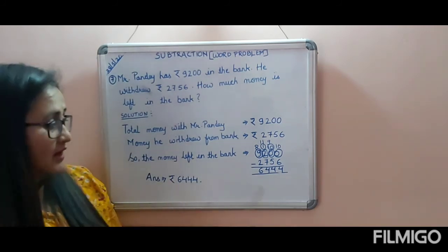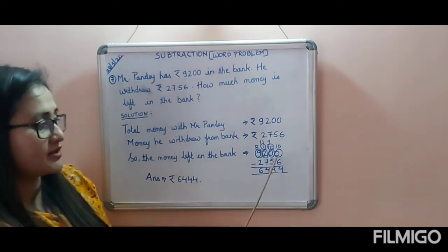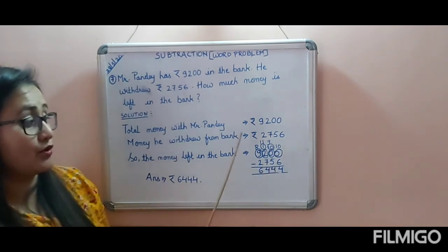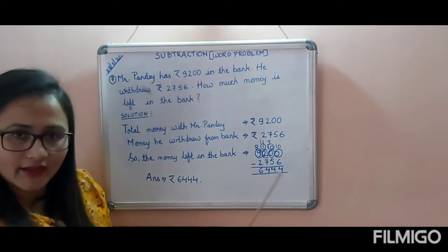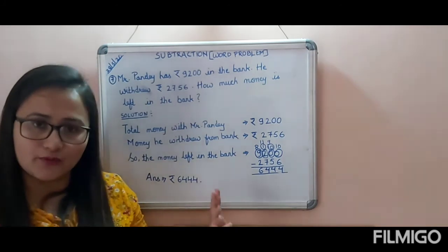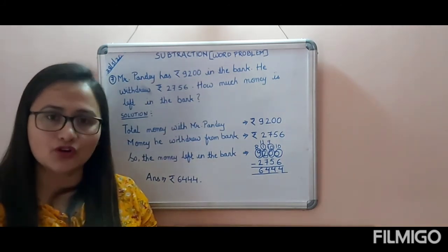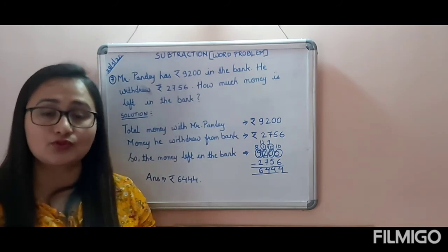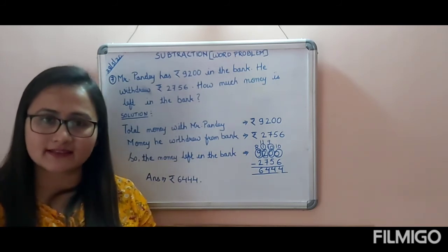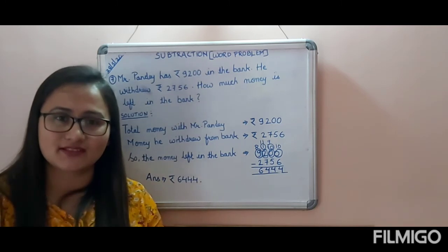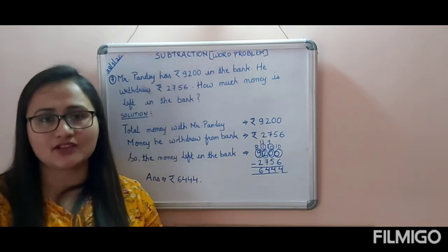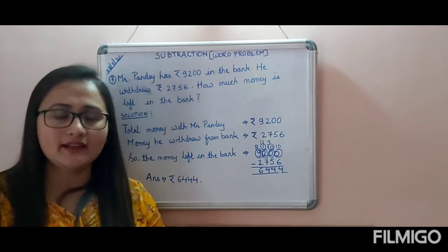Now you understand how to subtract when there is a zero. When there is zero in the ones place, borrow from the tens place; when there is zero in the tens place also, borrow from the hundreds place. Now do the rest of your questions as homework. We will move on to the next chapter — be sure to learn your multiplication tables, because the next chapter is multiplication and you cannot do it without knowing the tables.